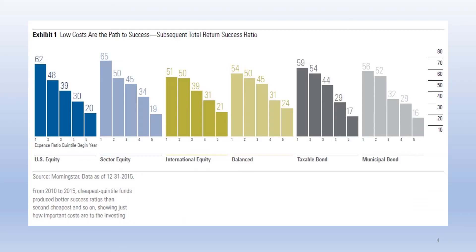This is Morningstar data and an interesting graph, because what it tells you is that expenses — fund expenses — are probably the biggest predictor of future success in a specific investment, in this case a mutual fund.